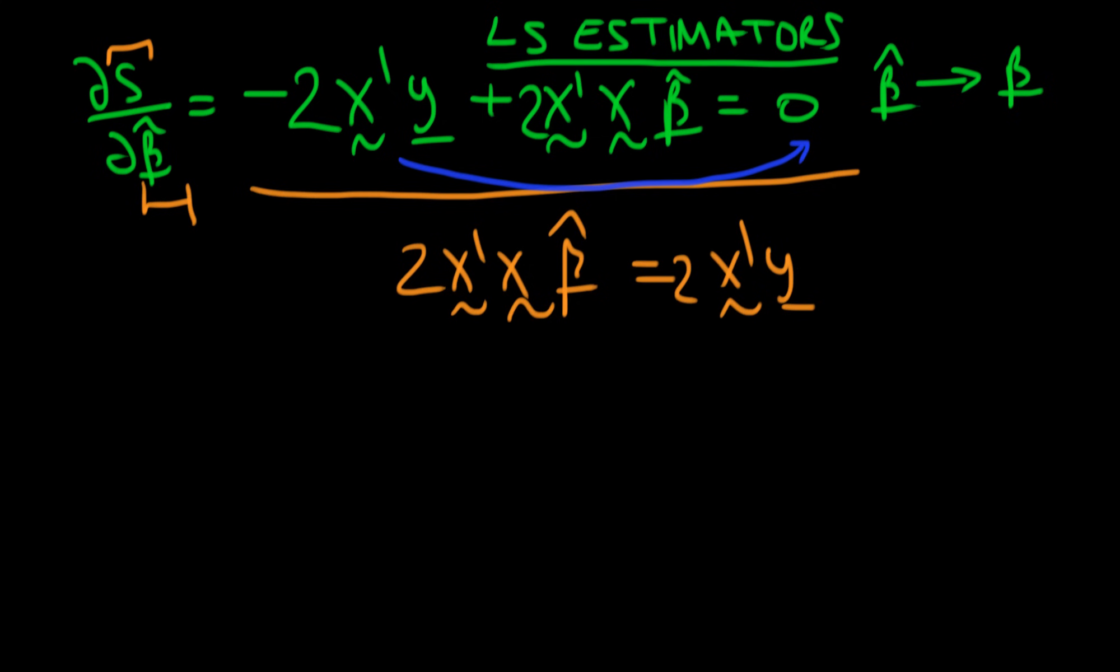And then we notice that we've got a 2 on both sides, so we can just divide through by that. So we've just got X'X times beta hat has got to be equal to X'Y for the case of least squared estimators.